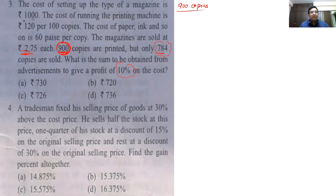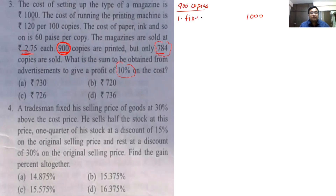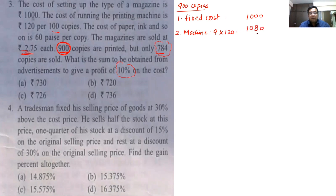I am making 900 copies, so let me calculate my costing. The cost of setting up the type of magazine is Rs.1000 — this is a kind of fixed cost. The cost of running the printing machine is Rs.120 per 100 copies, so for 900 copies: 9 multiplied by 120 equals Rs.1080. This is my machine running cost.